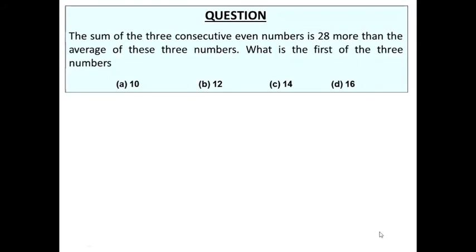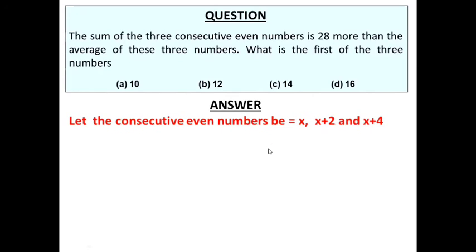The next question: the sum of three consecutive even numbers is 28 more than the average of these numbers. What is the first of the three numbers? For consecutive even numbers, the difference between two even numbers is 2. So if the first number is x, the second is x plus 2, and the third is x plus 4. The average of three numbers is their total sum divided by 3.